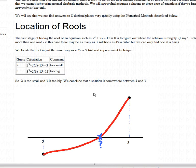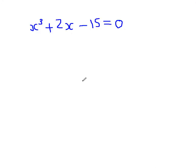Firstly, our equation is x³ + 2x - 15 = 0. I'm going to try and solve that.